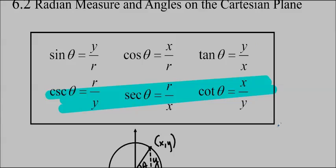Hello and welcome to Ms. Ma's Advanced Functions class. This is 6.2, Radian Measure and Angles on the Cartesian Plane.